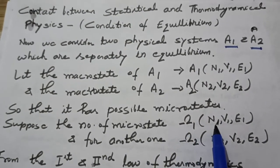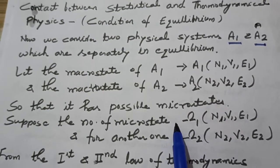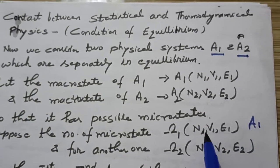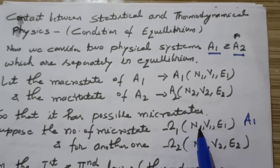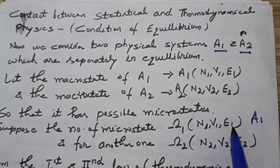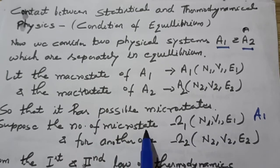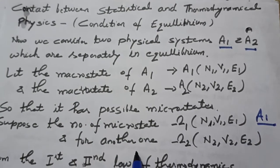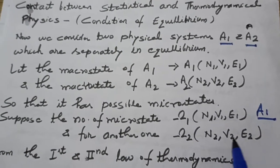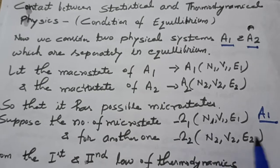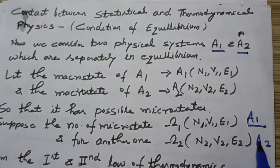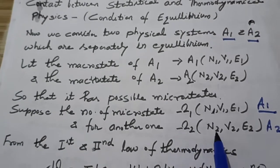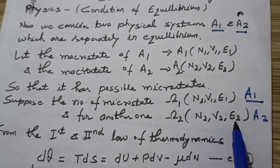The number of microstates for system A1 are assigned by omega1, which is a function of N1, V1, E1. Similarly, for system A2, the number of microstates are assigned by omega2, which is a function of N2, V2, E2.